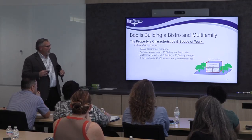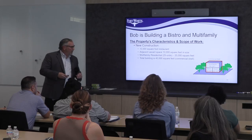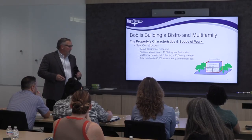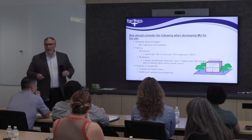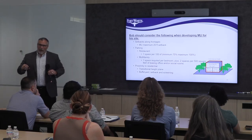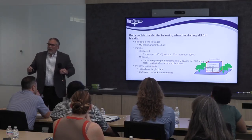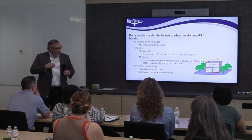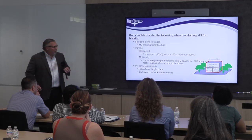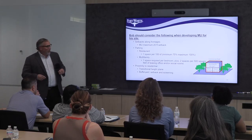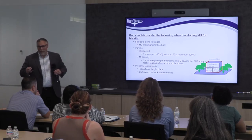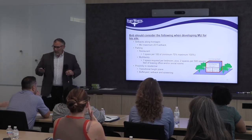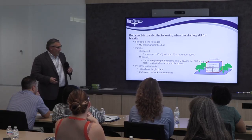Let's swing back to Bob. We already know he's trying to do a 10,000 square foot restaurant with some commercial on the bottom. Before Bob gets his zoning approval, he needs to understand the development standards he must adhere to. For example, there are setbacks along frontages — in Bob's case, he's got to make sure there's a maximum 20-foot setback. He can't go further than 20 feet; he's got to push that building close to the street.